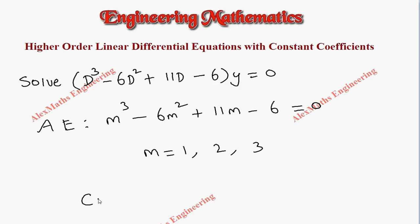Now as per the procedure when all the values are different we write c₁e^(m₁x) that is e^x, then c₂e^(m₂x) where m₂ is 2, then c₃e^(m₃x) which is 3, so e^(3x).